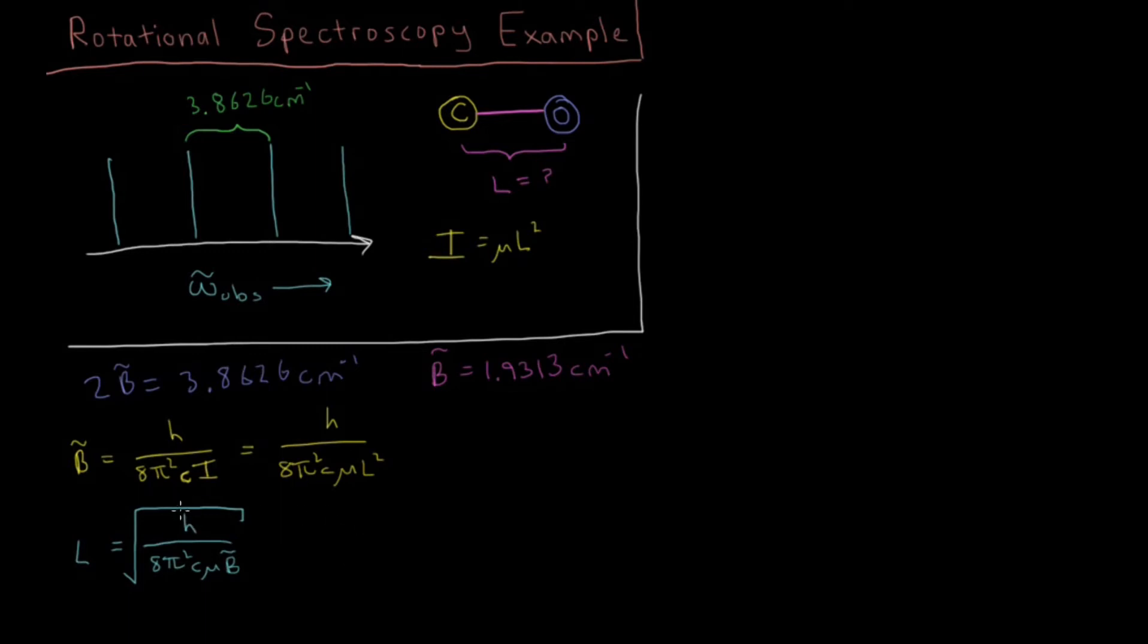Well, h is Planck's constant, we know that, we know 8π, we know the speed of light, we know that rotational constant. What about this μ, this reduced mass?